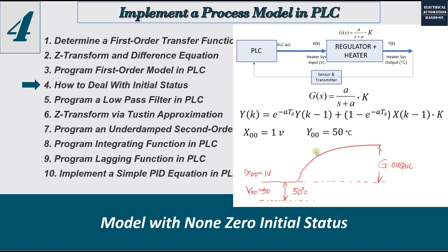Keep in mind that if you review a control textbook, most examples use a DC motor, and there is one assumption behind that: the initial status is zero and output is zero, because when you deliver zero voltage to the motor, the motor is definitely at zero RPM. So all DC motor examples have zero initial status.